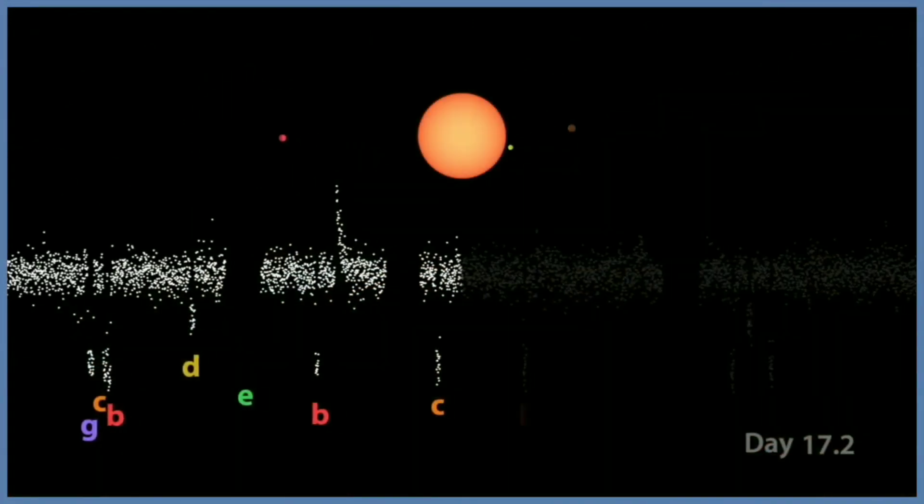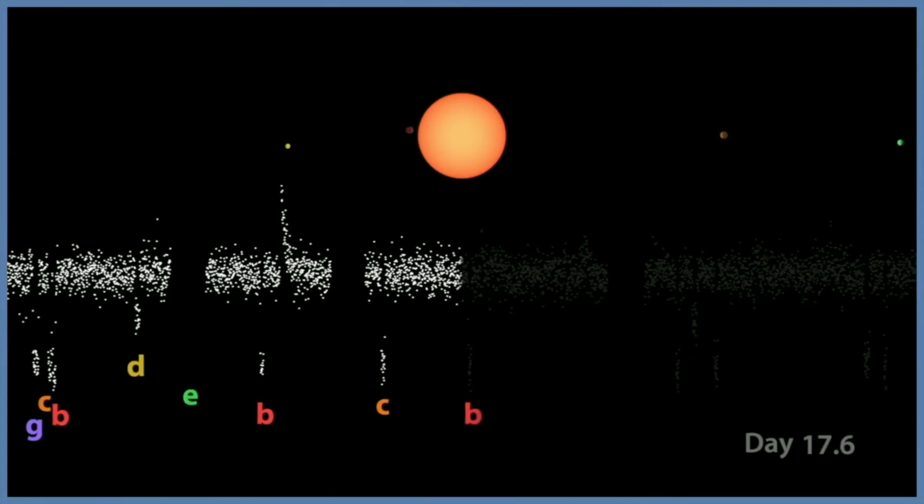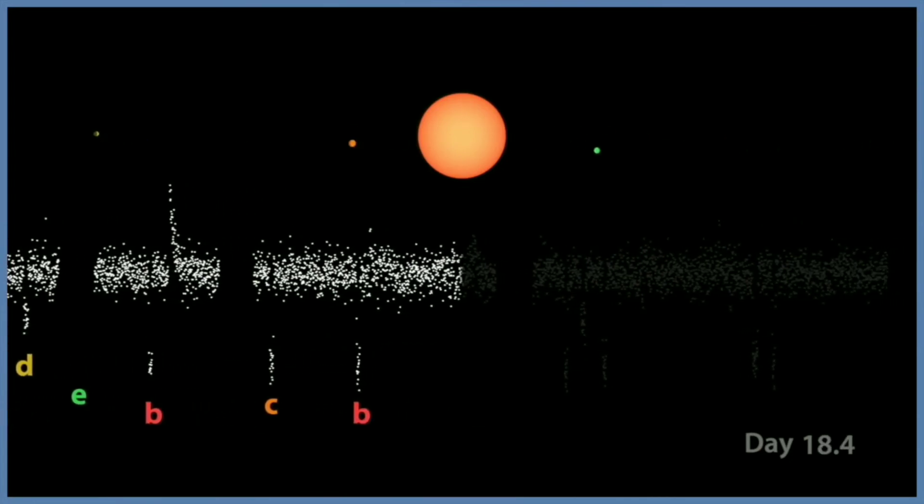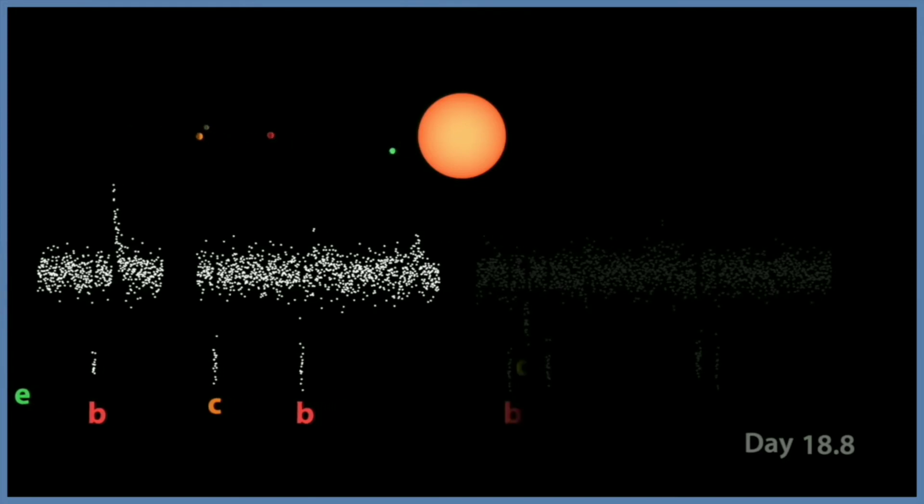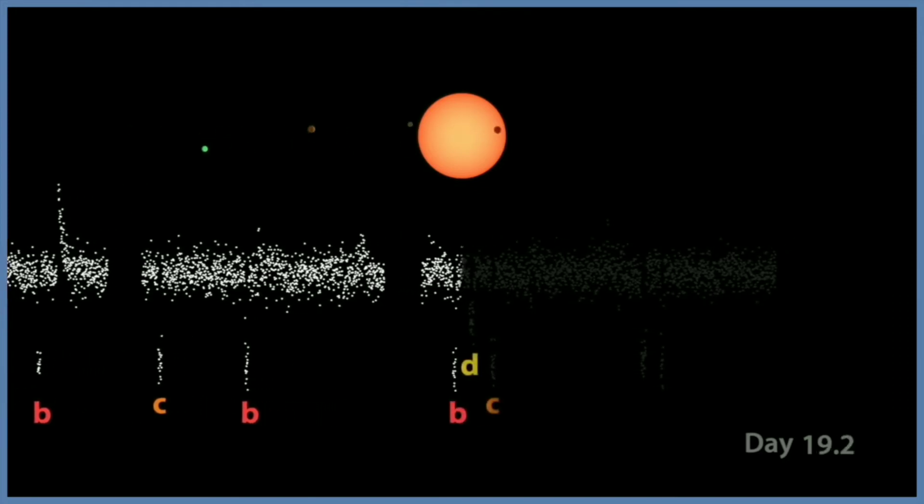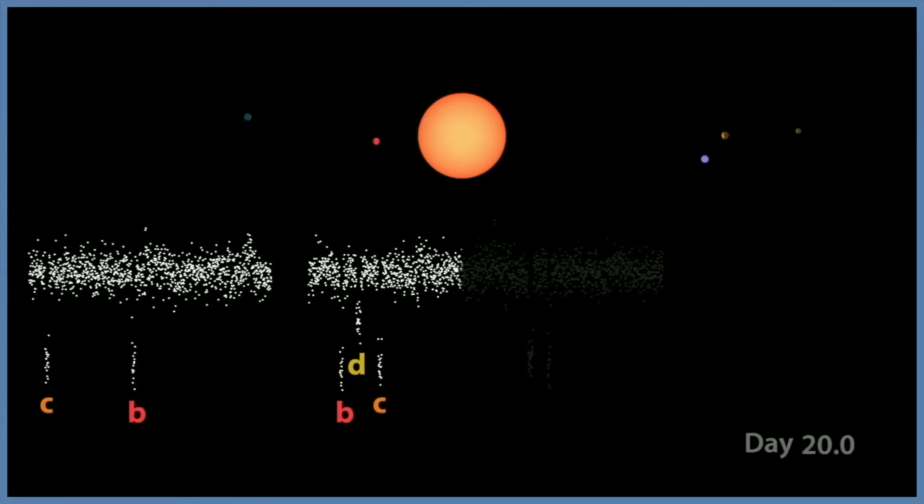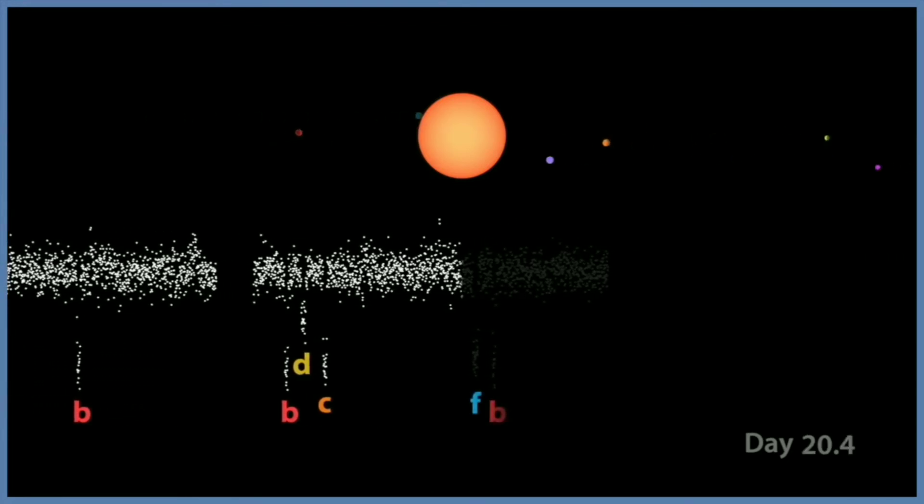In 2016, Spitzer observed this system for nearly 500 continuous hours. Spitzer uniquely positions its orbit to observe the crossing of these transits of the planets. This basically means as the planet goes in front of the host star, it blocks out a little bit of light and the telescope can sense this.